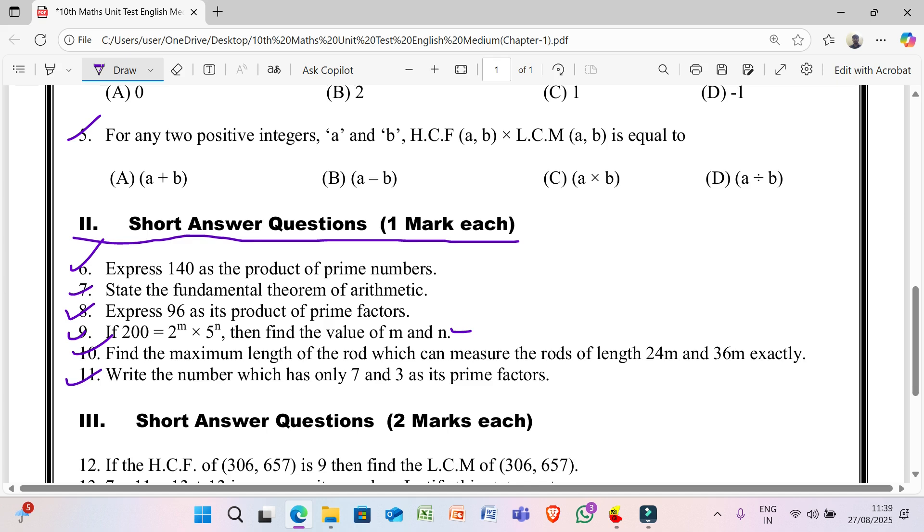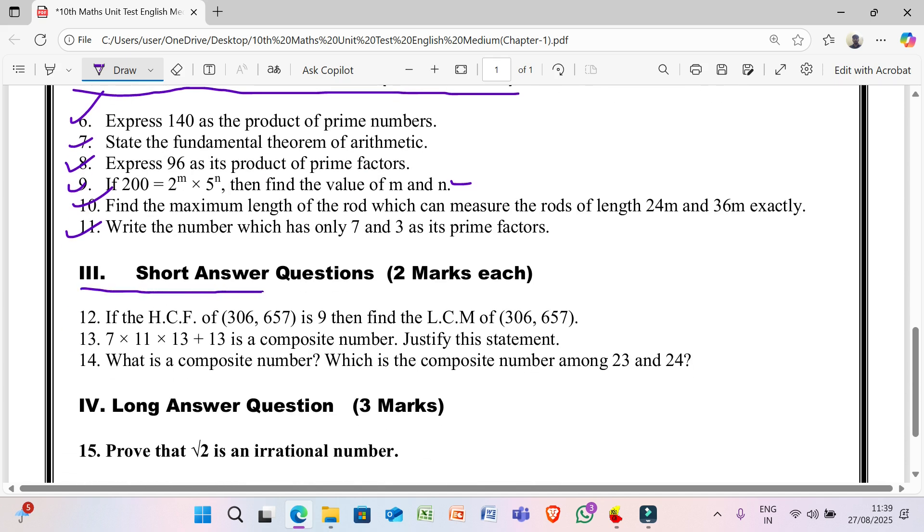11th question: write the number which has only 7 and 3 as its prime factors.